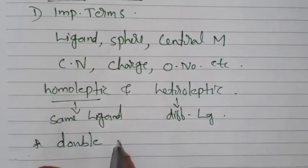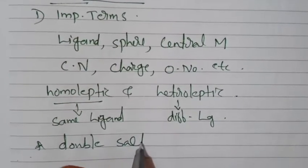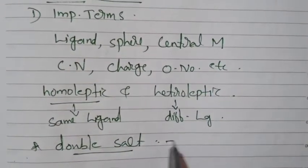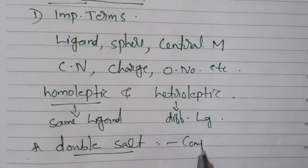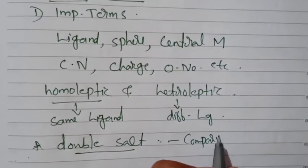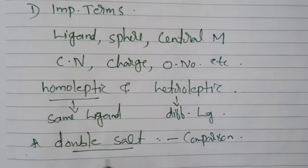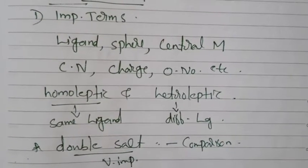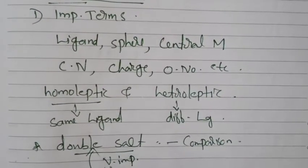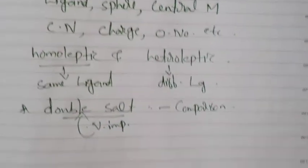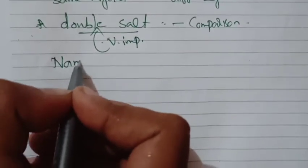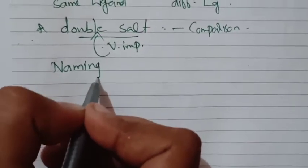This is the comparison of coordination compounds with double salt. The comparison of double salt is very important from the exam point of view. Every double salt is completely ionized, whereas coordination compounds are not completely ionized — that is the key difference.